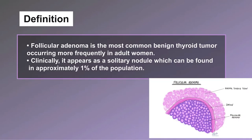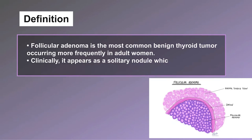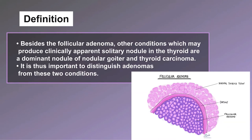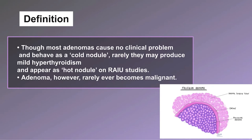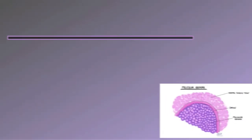Follicular adenoma is the most common benign thyroid tumor, occurring more frequently in adult women. Clinically it appears as a solitary nodule, found in approximately one percent of the population. Other conditions producing a clinically apparent solitary nodule include a dominant nodule of nodular goiter and thyroid carcinoma. Most adenomas cause no clinical problem and behave as a cold nodule, though rarely they may produce mild hyperthyroidism and appear as a hot nodule on radionuclide studies. Adenomas rarely ever become malignant.